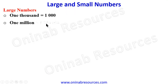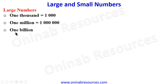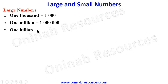One million has six zeros, because if you multiply one thousand by one thousand you have one million. Then there is one billion. One billion is one thousand million — we don't call it one thousand million, we call it one billion, and it has nine zeros.